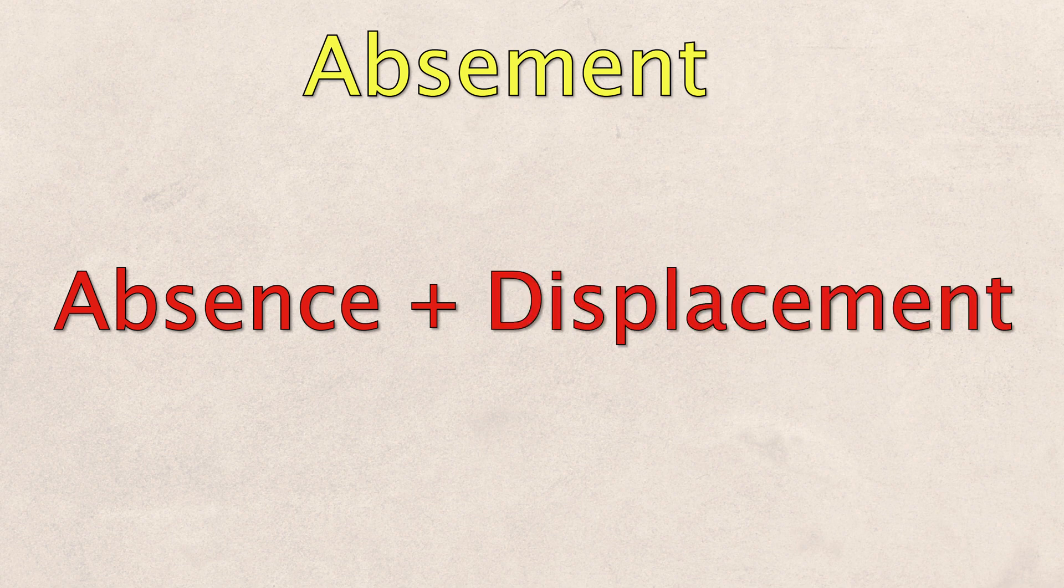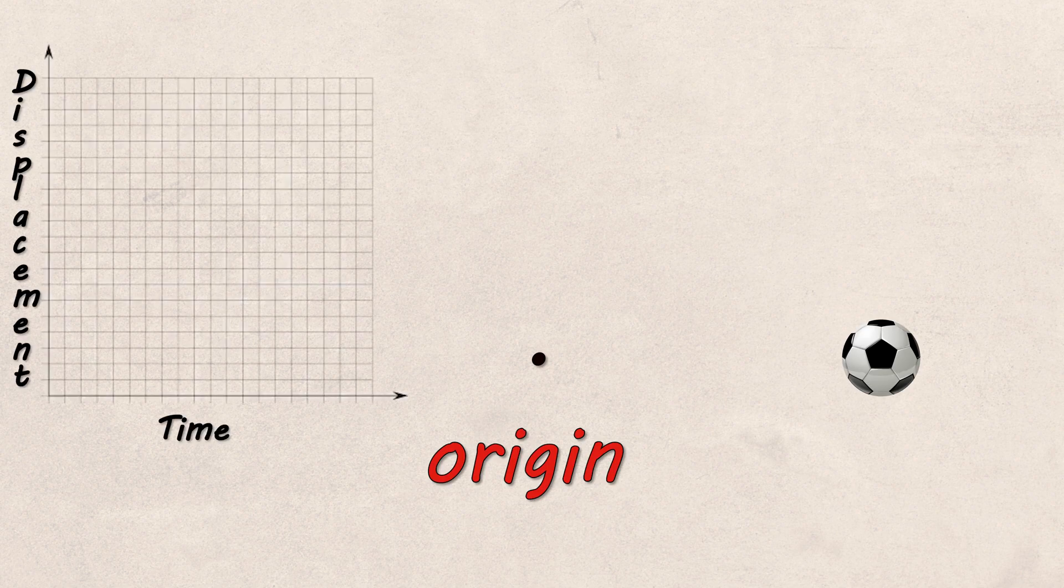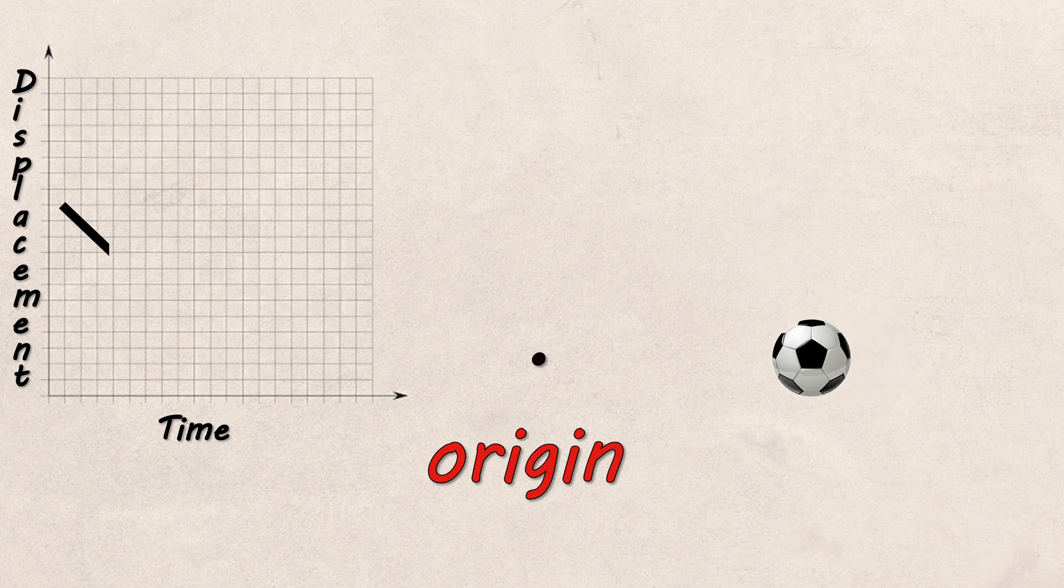The term comes from a combination of absence and displacement. But what even is absement? Well, the simplest way I can explain it is to picture a ball some distance away from an origin. Let's graph the displacement versus time as the ball moves closer and further away. The area under this graph is absement.